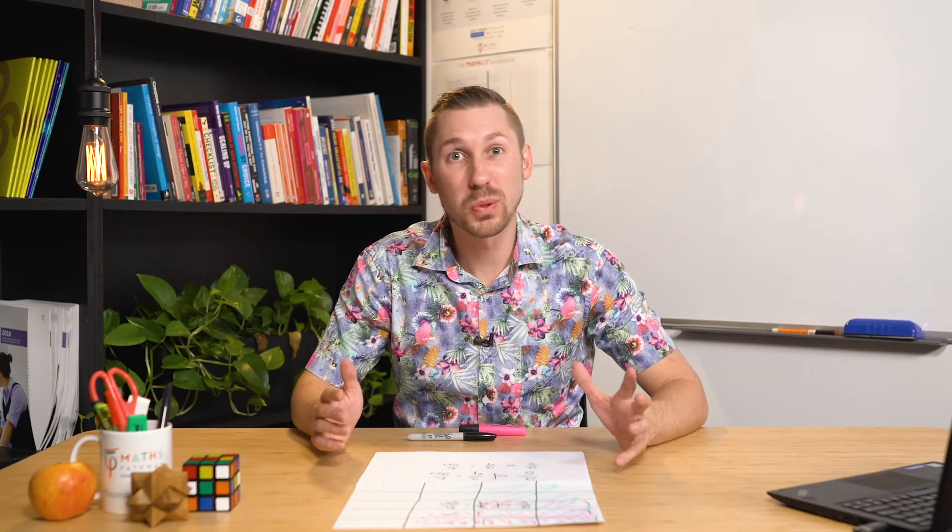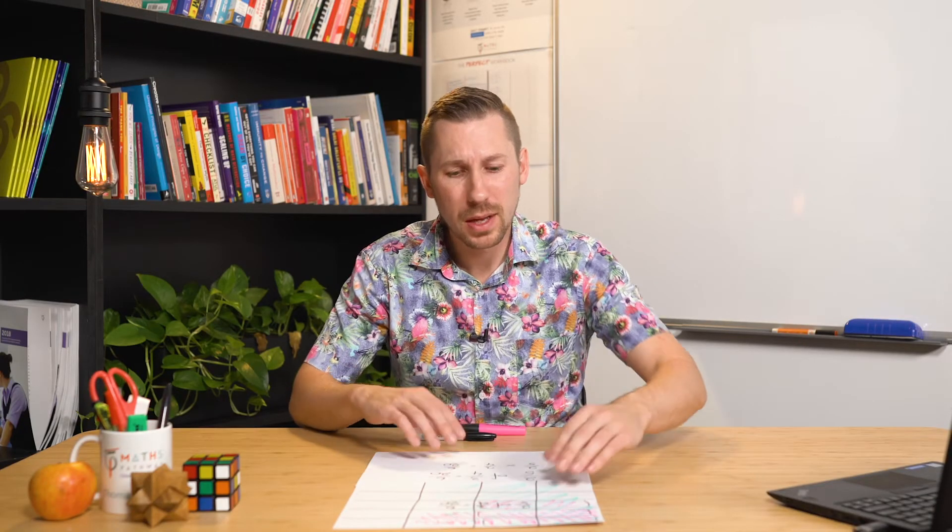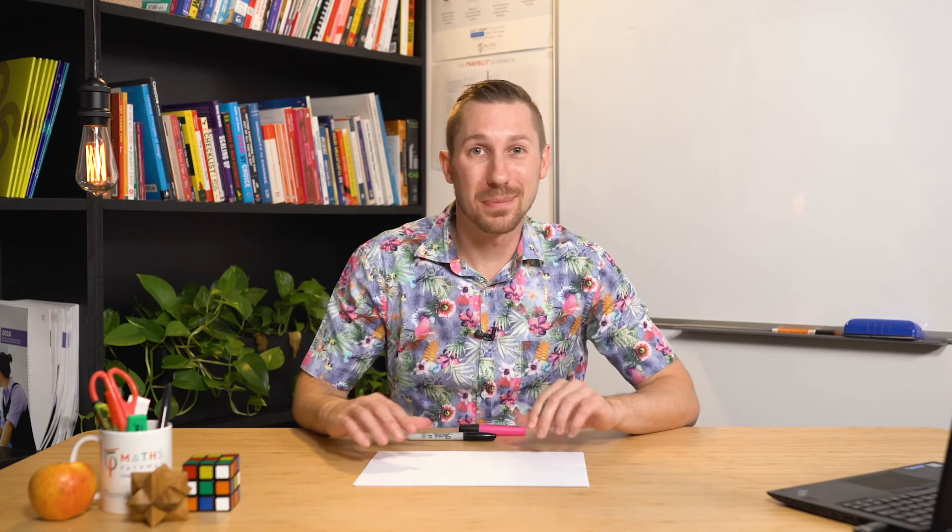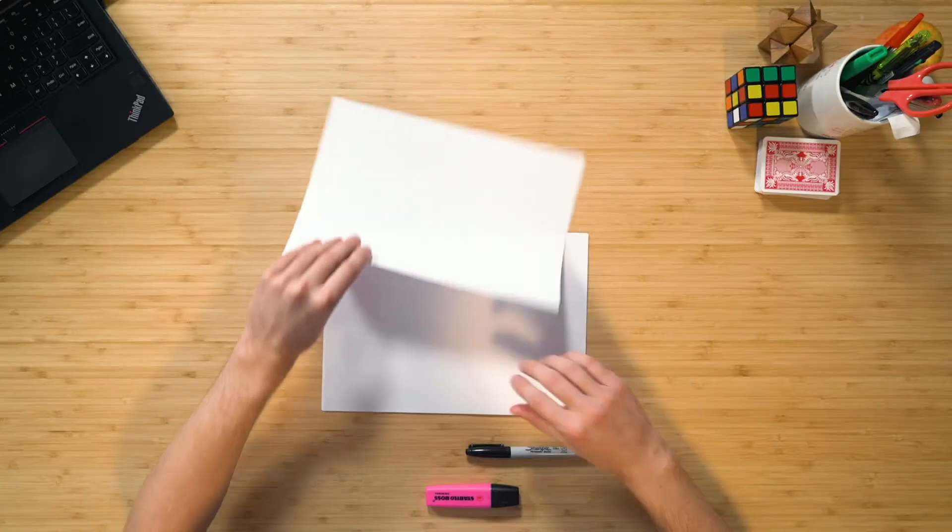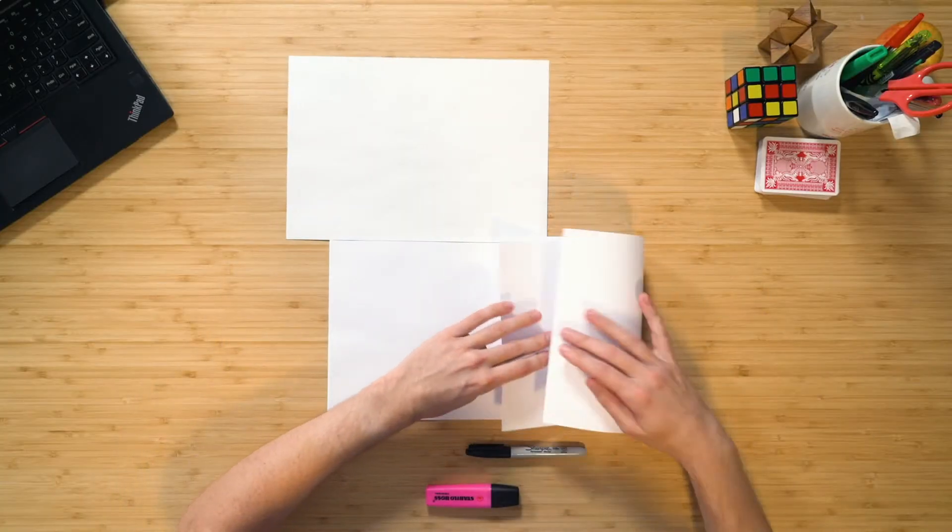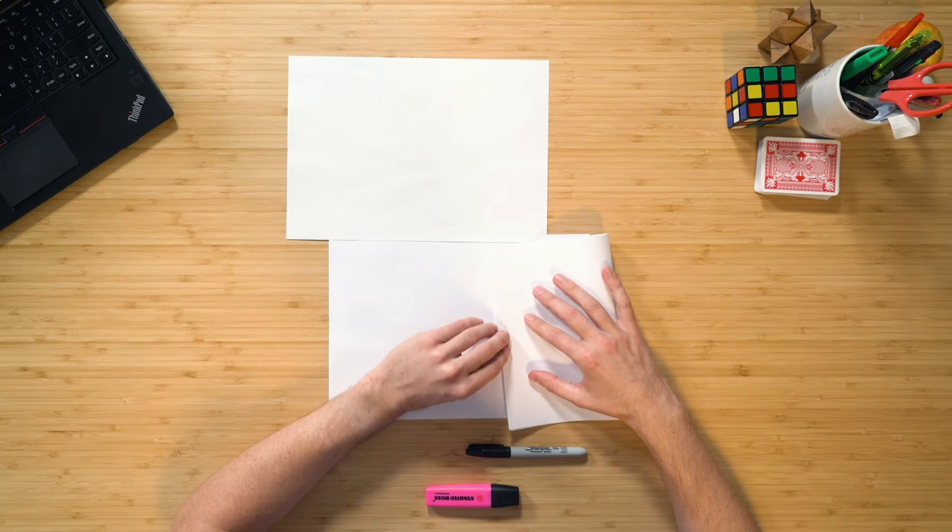Now this model actually works for multiplying improper fractions as well. Let's use this piece of paper as an example. We have one piece of paper here. Now if I wanted to multiply one and a half by one and a half, well I simply go, there's one, and I'll fold this here into half that way.